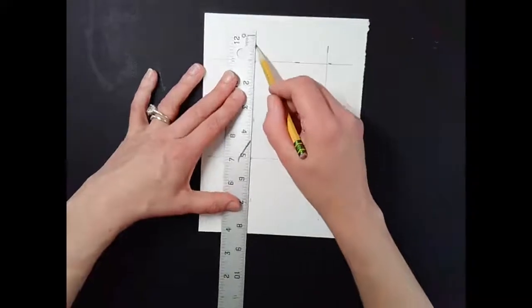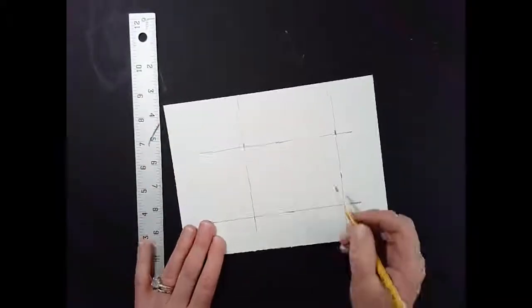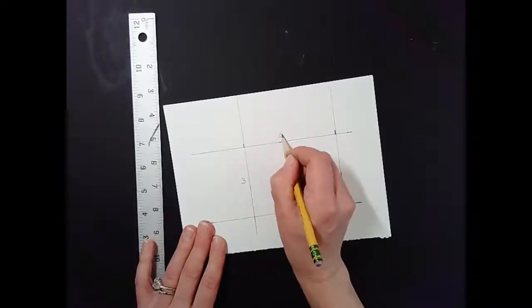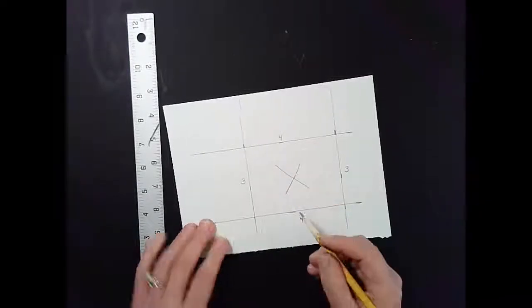As you can tell, I'm not being careful about the overlaps and the lines and all those things. It doesn't matter. What matters is that I have a 3-inch space by a 4-inch space. And I'm going to cut this part out.